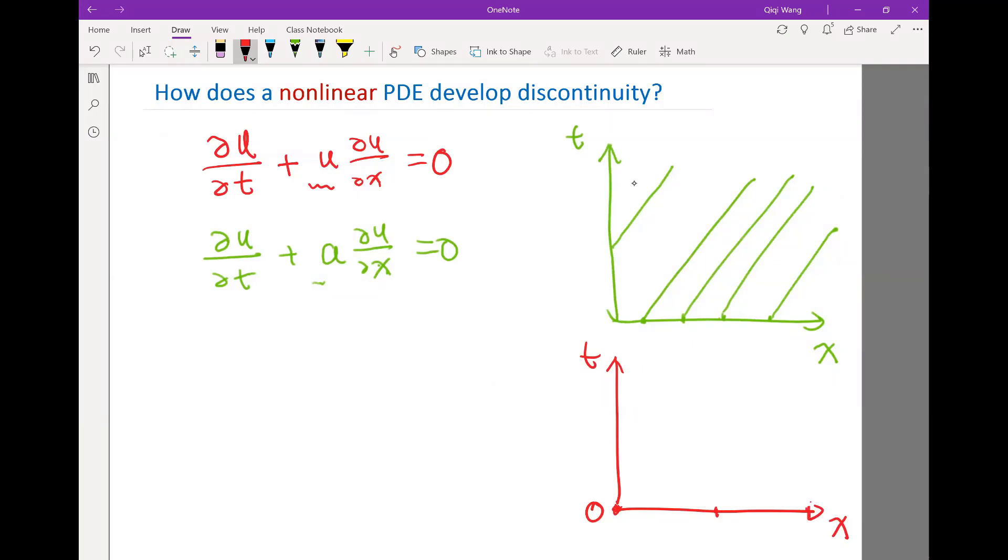It would be zero here, zero here, zero here, and the solution would be one here, zero here, zero here, would be minus one here, and zero here, right?